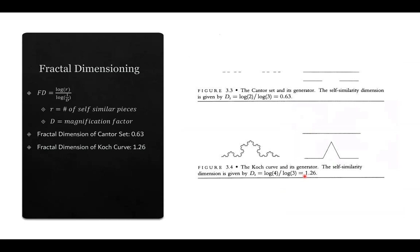Fractal dimensioning is quite a good way to quantify minute details in architecture, as well as to quantify fractals themselves. Fractal dimension is a measure of how quickly a curve approaches infinity, and visually speaking, it is a measure of how much texture a line represents. As shown on the right, the fractal dimension of the Cantor set is 0.63 — this line is pretty smooth and straight. However, the Koch curve has a fractal dimension of 1.26, which is higher, and the curve has a lot more texture and is rougher.